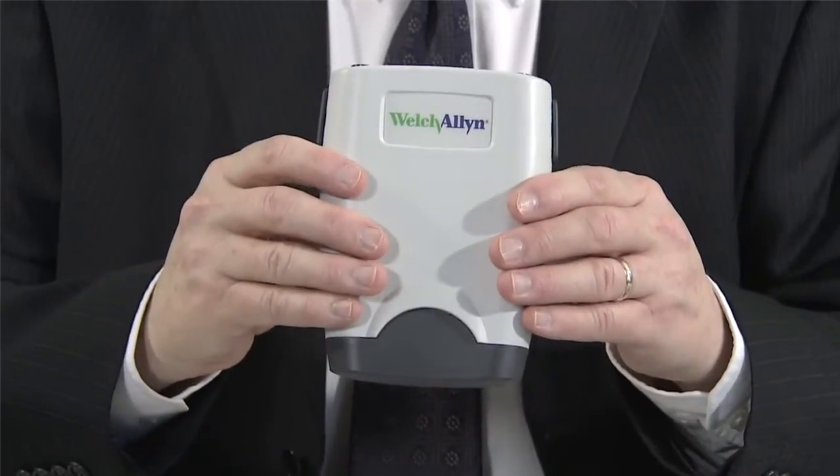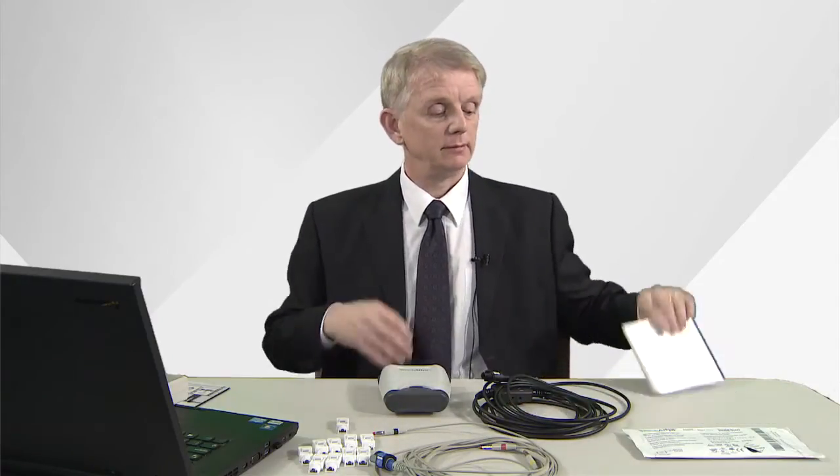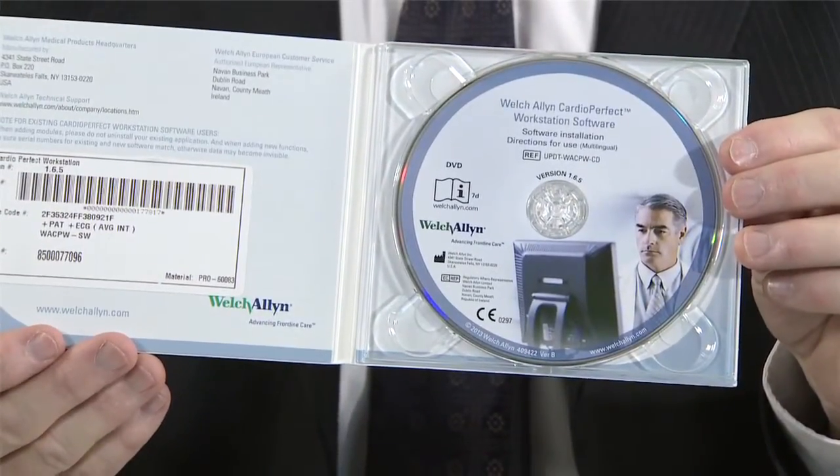But first let's look at the components. When you buy the ECG you get the unit itself, a 5 meter USB cable to connect the unit to the PC or laptop, a patient cable, Welsh Allen software which should be loaded to the PC or laptop on which you're going to do the ECG. A full installation guide is available from your Welsh Allen distributor.